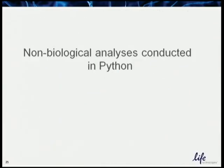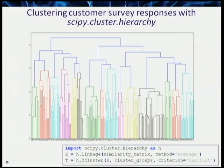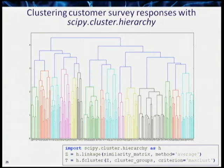I have two non-biological analyses conducted in Python I'd like to share. First, we did a customer survey and clustered the responses using cluster.hierarchy to figure out how they group — so we could decide whether the products we think customers want are relevant to what they actually say they want. Once I had defined the similarity matrix, it only took three lines of code to get the result.